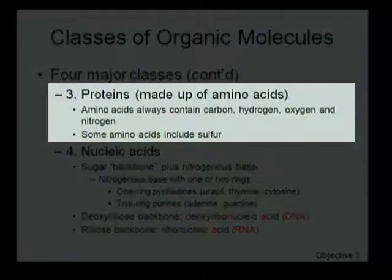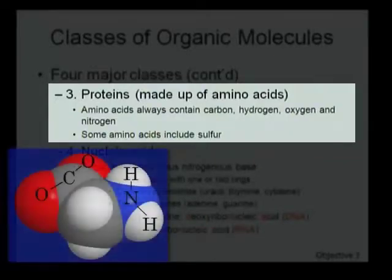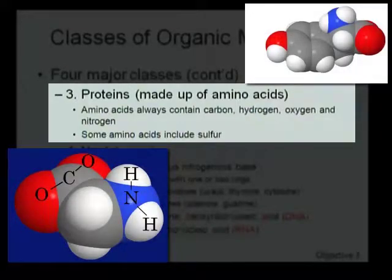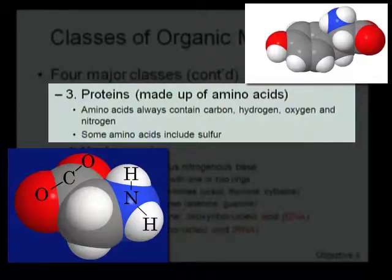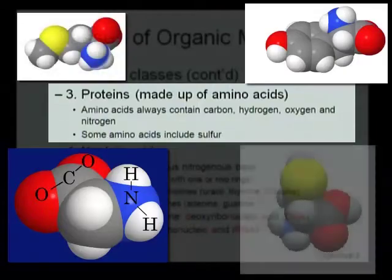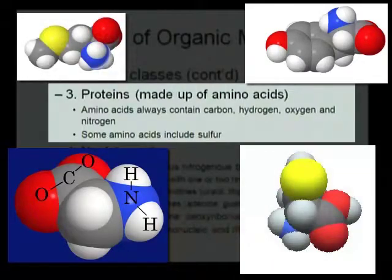The next major class of organic molecules we're going to study are proteins. Proteins are made up of amino acids. Amino acids always have carbon, hydrogen, oxygen, and nitrogen in them. We know this because amino acids all have a carboxyl group — the formula for a carboxyl is COOH — which accounts for carbon, hydrogen, and oxygen. On the other end of the molecule there's an amino group, which is a nitrogen with two hydrogens. Some amino acids also include sulfur.